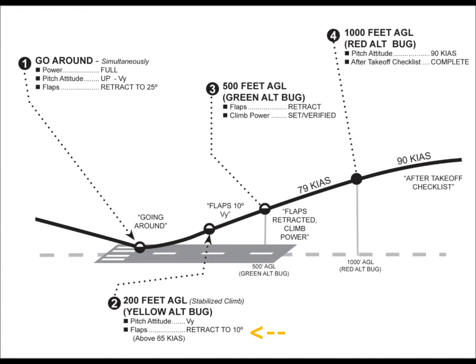Climbing through 200 feet AGL on the go-around, the pilot can retract the flaps to 10 degrees once a safe airspeed of at least 65 knots is attained. The aircraft should then be trimmed out for a climb at VY, best rate of climb, or VX, best angle of climb, as appropriate. VY is typically used, but VX should be flown if an obstacle needs to be avoided.